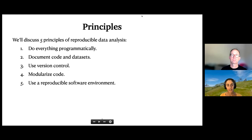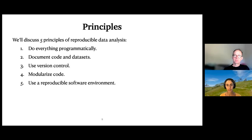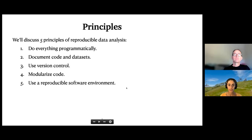I'm going to talk today about five high-level principles of reproducible data analysis. First, to do everything programmatically — replacing manual operations on your data with doing those same things in code that is much more traceable. Second, to document code and data sets. Third, to use version control. Fourth, to modularize code. And fifth, to use a reproducible software environment.